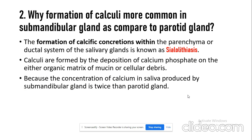The second question is: why is formation of calculi more common in the submandibular gland compared to the parotid gland? The formation of calcifying concretions within the parenchyma or ductal system of the salivary gland is known as sialolithiasis. This sialolithiasis occurs because of the deposition of calcium phosphate on the organic matrix or on cellular debris.